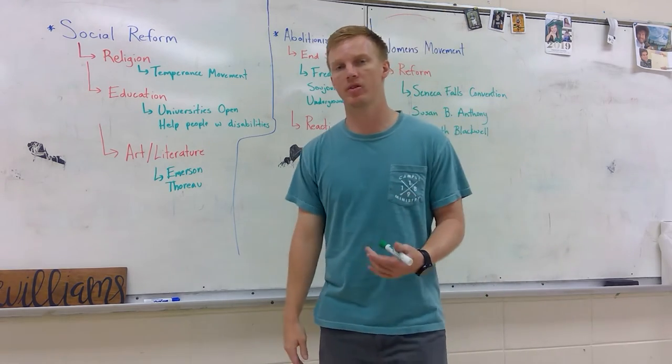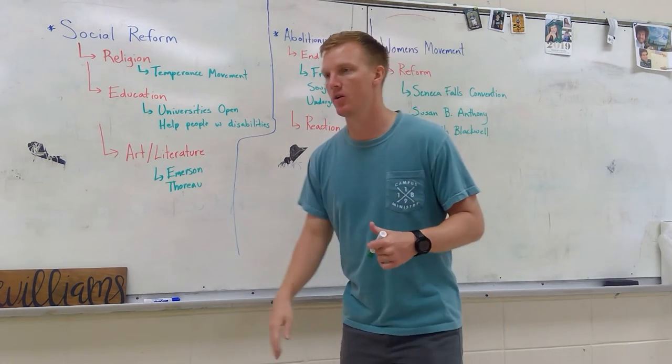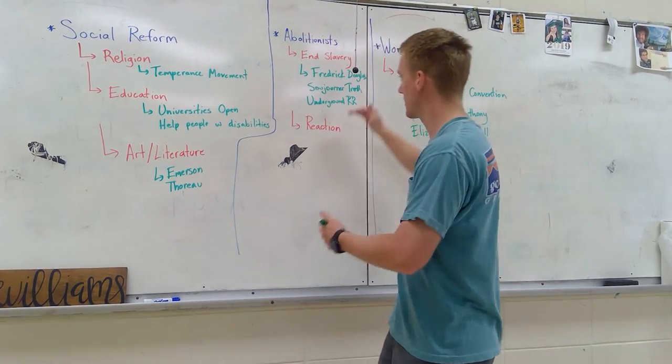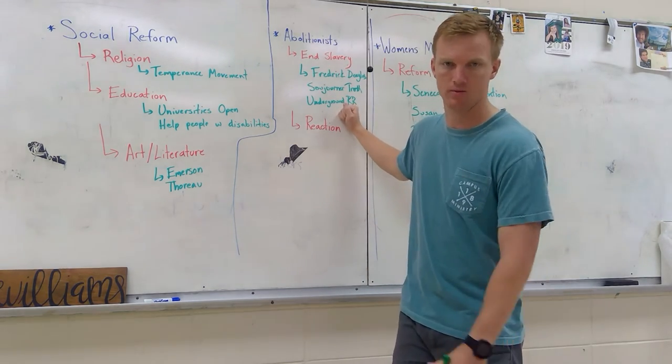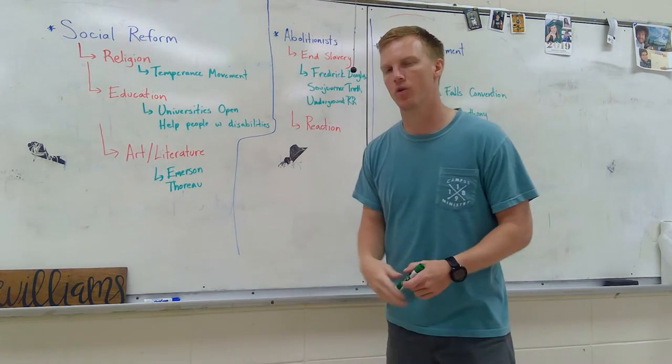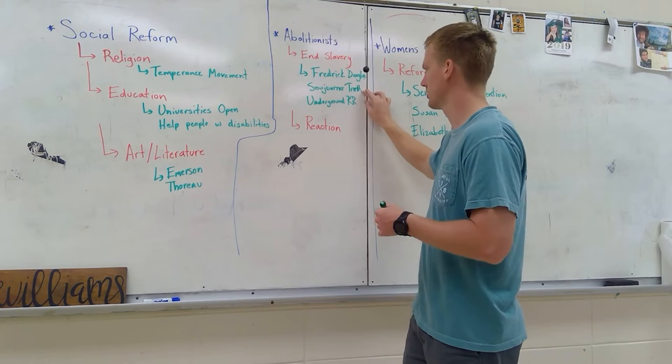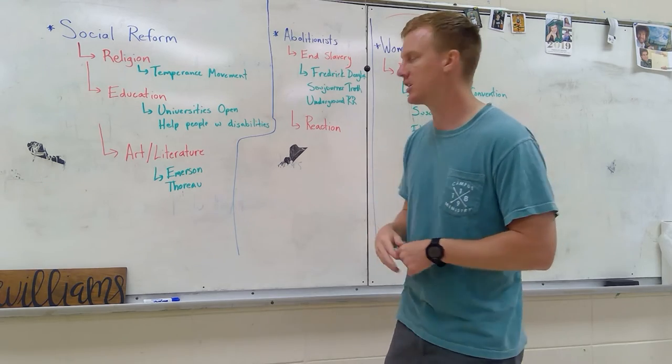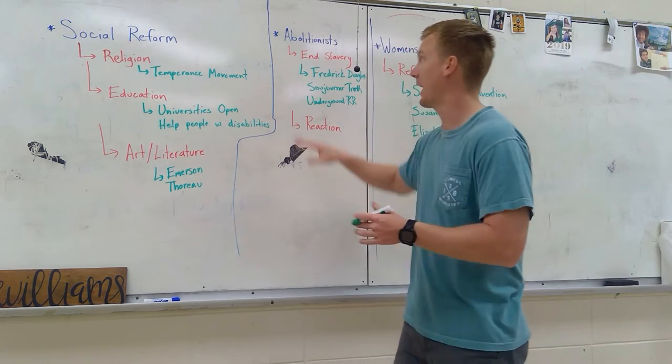The second subtopic in lesson two was the reaction. Obviously, there's always going to be a reaction if people are trying to break the mold. We saw angry white Americans back in that day going against these people—going against Frederick Douglass, going against Sojourner Truth, trying to bust up the Underground Railroad. We see reaction in a lot of reform. These people knew they were going to face some type of retaliation, and that's what we read in the second half of lesson two.